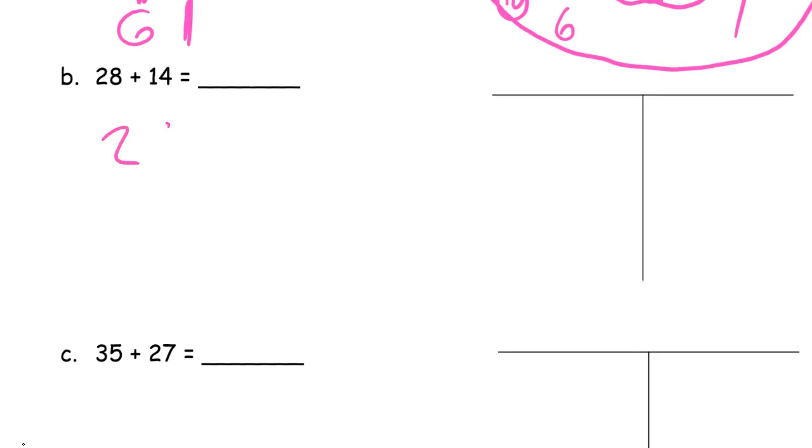So 28 plus 14, do the vertical way first and then check it with the disks. 8 plus 4, we're always going to do mentally, right, the 10s first, but this is a pencil and paper method, so we're always going to, when we do it vertical, and some people will draw in a little line here to separate the 10s and the 1s. That's okay, you don't have to do it, but if it helps you then keep doing it. 8 and 4 is 12.